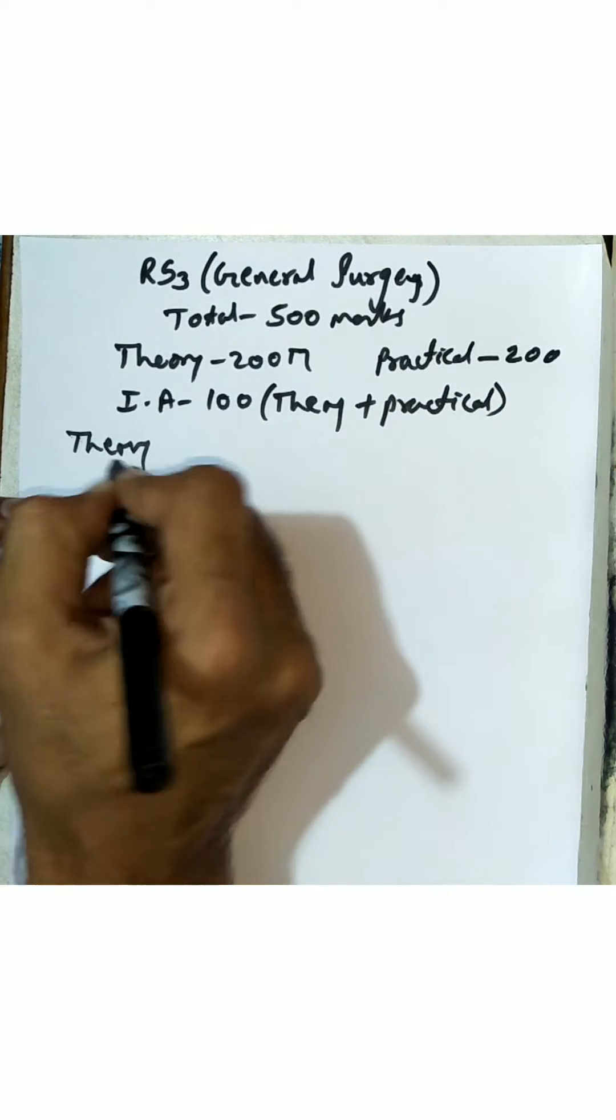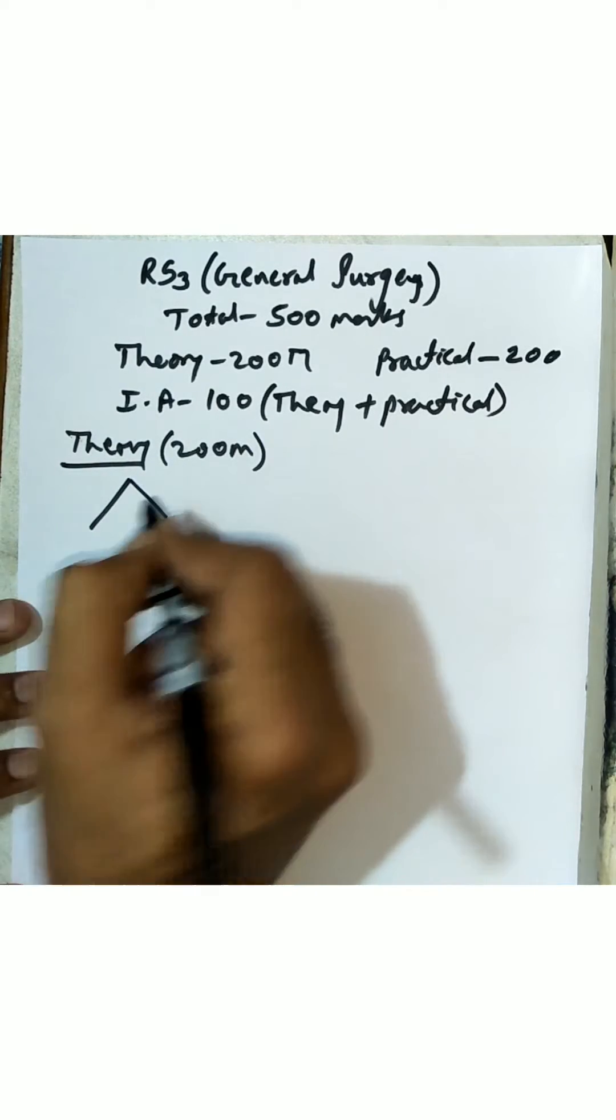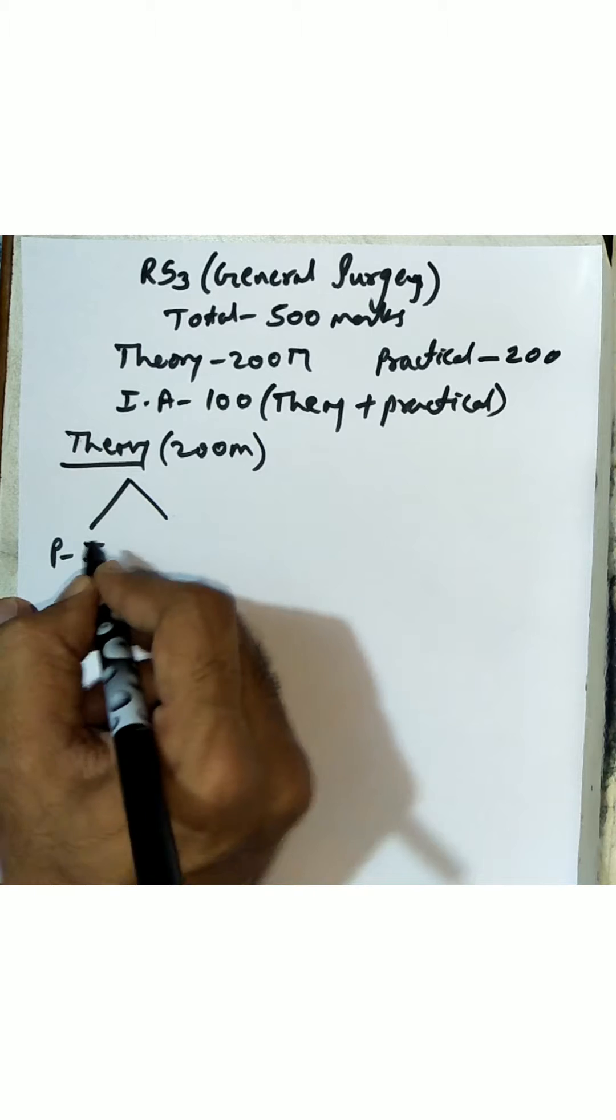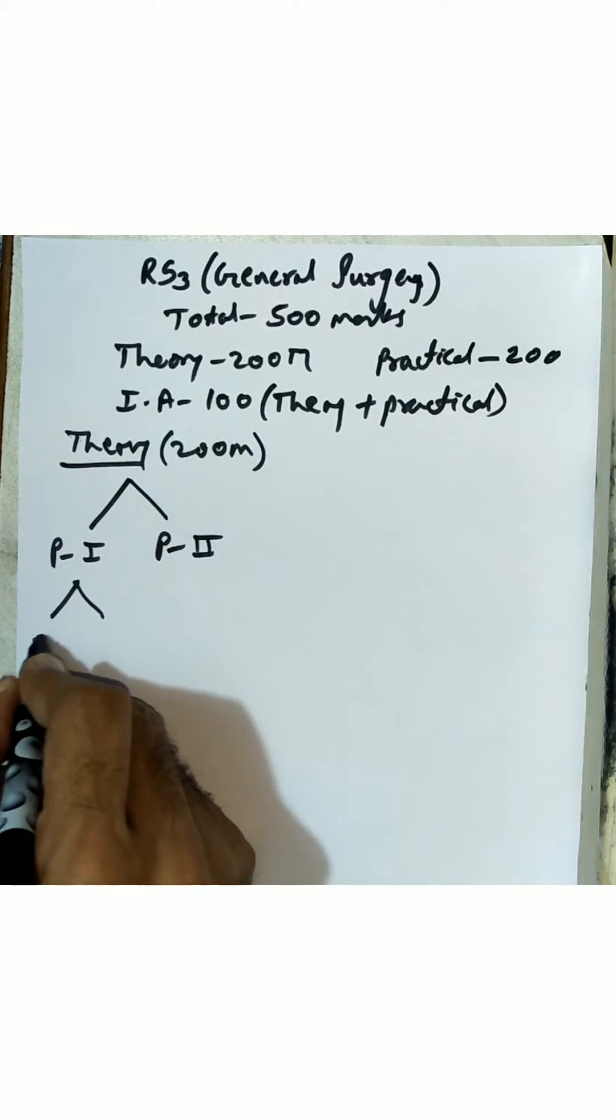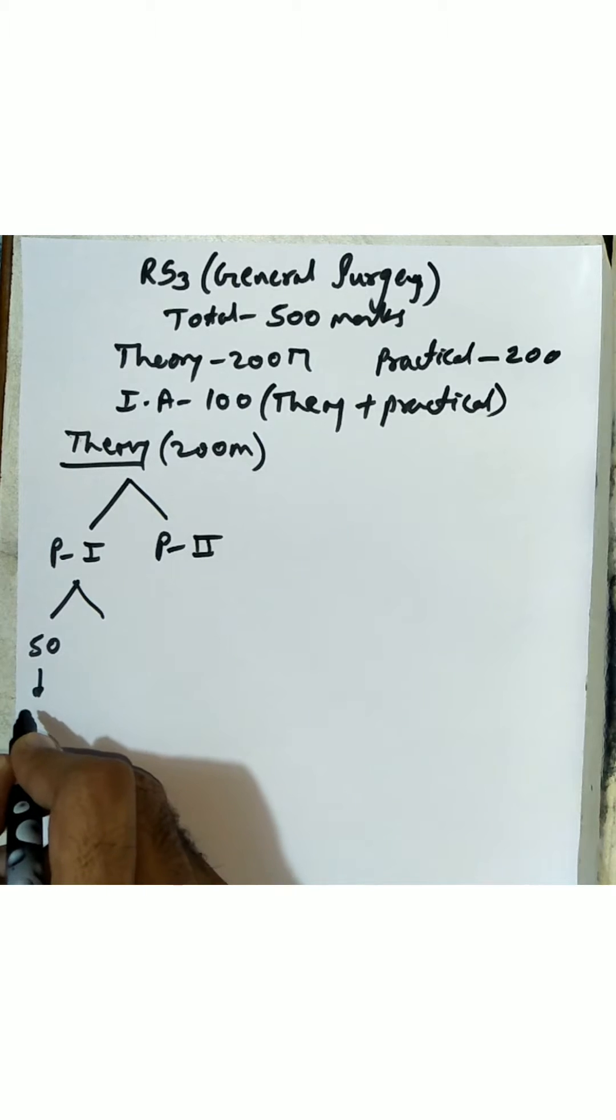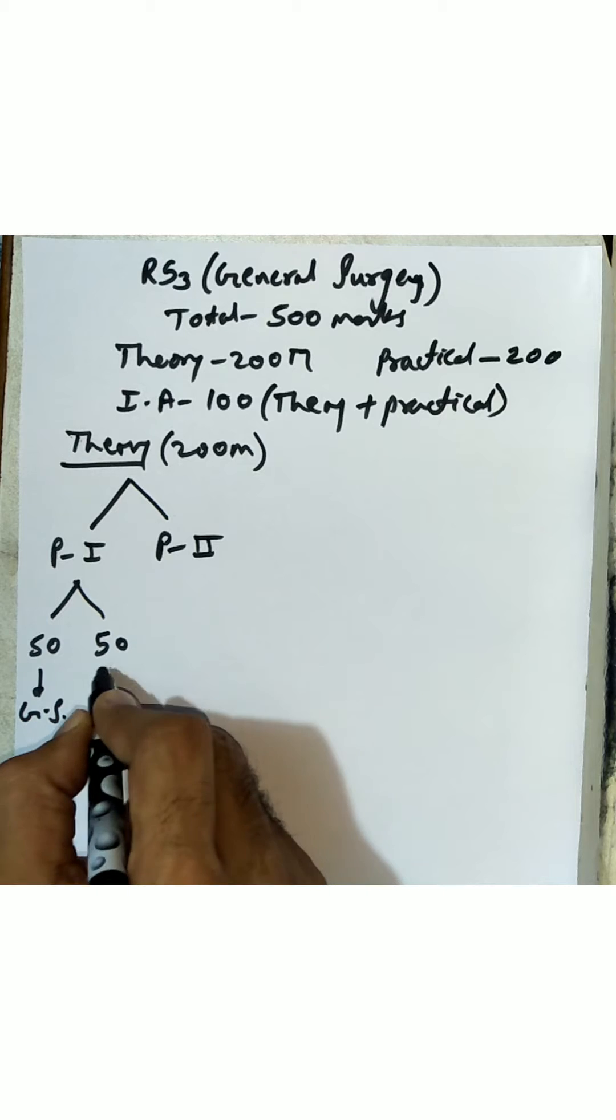Now let's see the split up for theory. In theory, it is for 200 marks, so you have two papers: paper 1 and paper 2. Paper 1 is for 100 marks and paper 2 is for 100 marks. Paper 1 has a split up of 50 plus 50, that is 50 marks for general surgery and 50 marks for orthopedics.